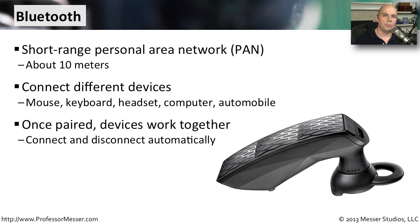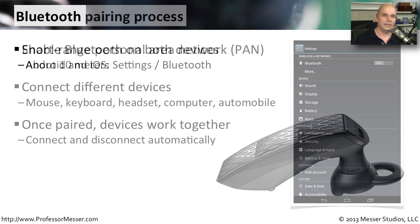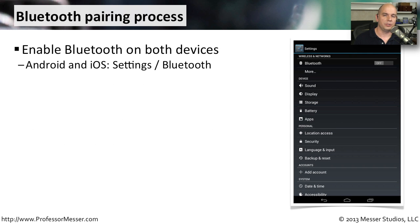Once you pair your mobile phone with one of these Bluetooth devices, you can use them together. You don't have to pair every time you want to use them. Once you pair them the first time, they automatically recognize each other. Any time you're in the general area where that device happens to be, it automatically connects to your mobile device and becomes active. It's this pairing process that ensures that your mobile device is communicating to your Bluetooth devices and nobody else's.